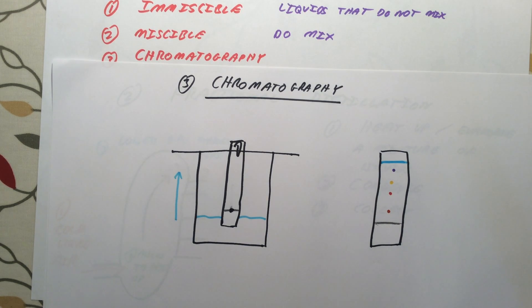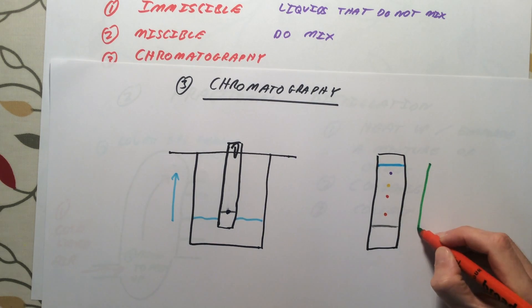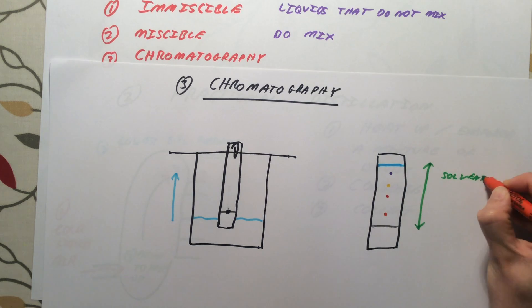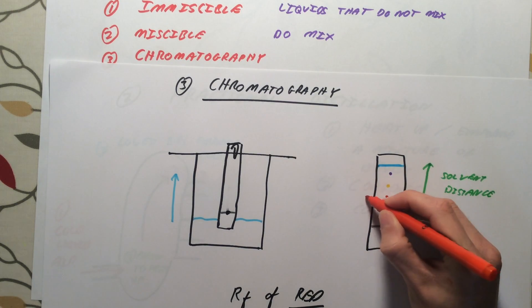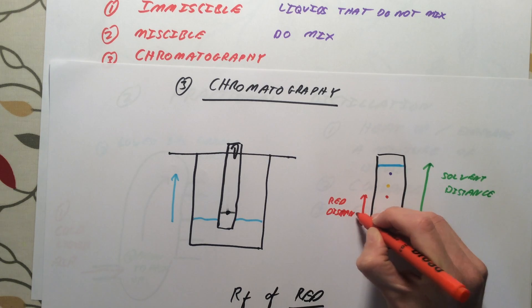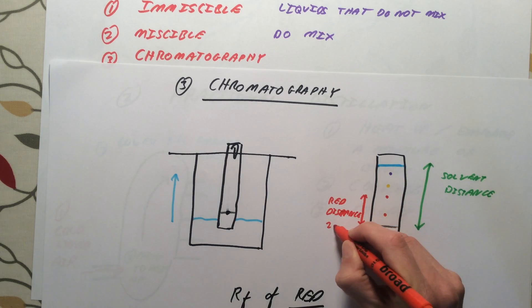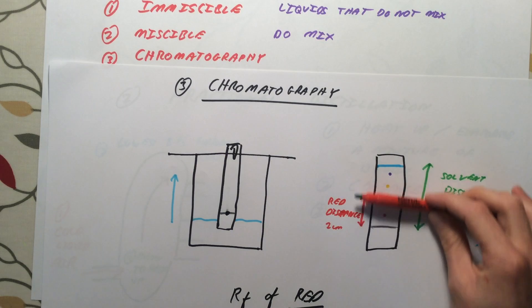Now when it comes to analysing and doing some calculations with this, we need to be able to measure and then use certain distances. First off, the distance that the water or the solvent has travelled is called your solvent distance. And that is our reference point here. If you are asked a question to calculate the RF, or retention factor of, let's say, red here. What you need to do, first off, once you've got your solvent distance, you're also going to need this red distance here. I'm going to make up some numbers. I'm going to say that this red has travelled 2 centimetres, and I'm going to say that my solvent has travelled 4 centimetres.